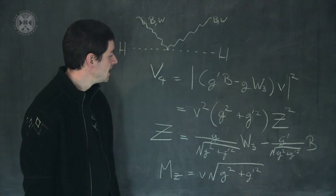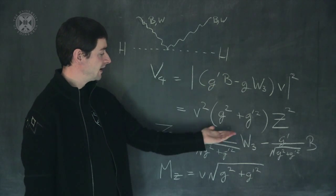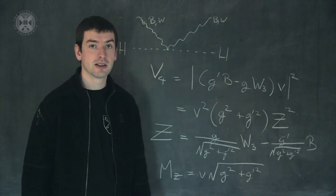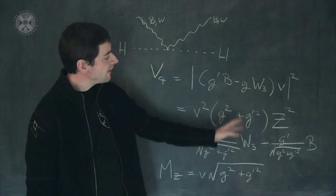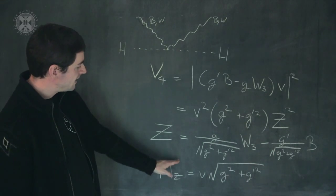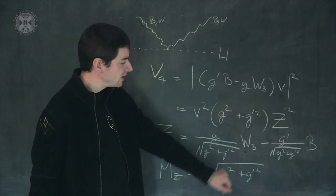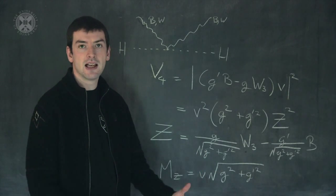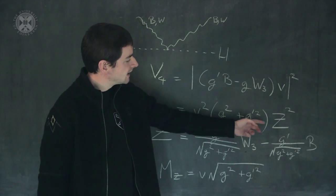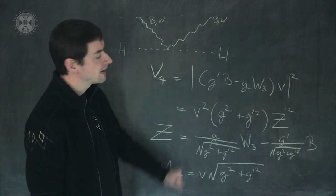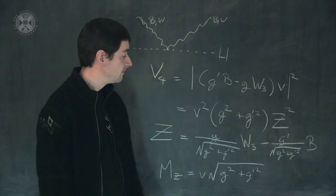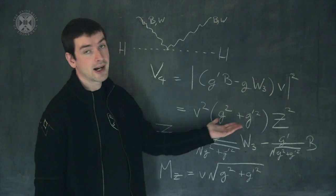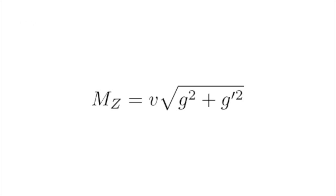All of this gets squared. We can pull out two powers of V, and a combination of the couplings G and G prime. Everything else that remains we call Z — it's a linear combination of the W3 vector field and the B vector field with some coefficients. Z itself is a massive vector field. This equation is a simple harmonic oscillator term for Z. The combination V squared times (G squared plus G prime squared) must therefore be the square of the mass of Z. So the Z boson mass is given by this formula.